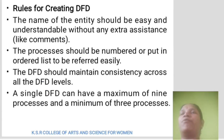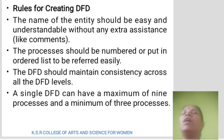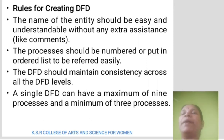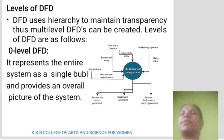Rules for creating a DFD: The name of the entity should be easy and understandable without any extra assistance. The processes should be numbered or put in order to be referred to easily. The DFD should maintain consistency across DFD levels. A single DFD can have a maximum of 9 processes and a minimum of 3 processes.